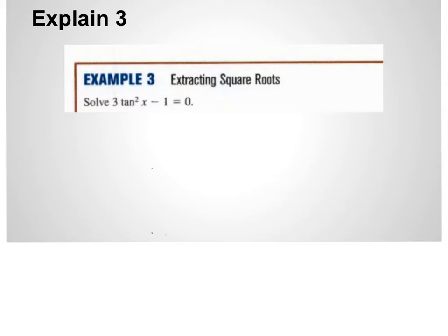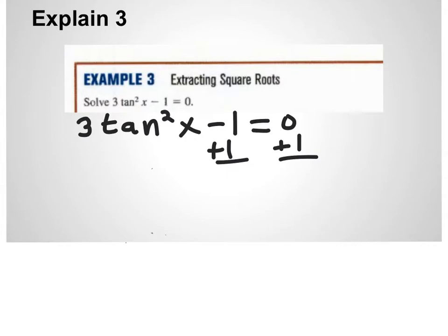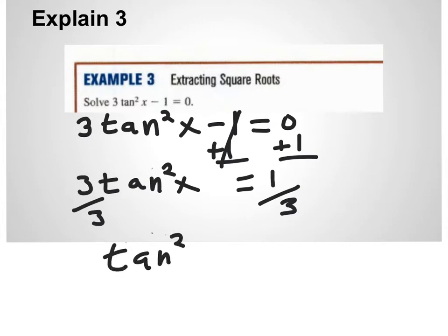Remember our goal is to isolate the trig function. So I have 3 tan²x - 1 = 0. The first thing I want to do is add 1 to both sides. We're using our inverse properties to isolate tan²x. That leaves me 3 tan²x, the 1's go away, equal sign comes straight down, and it's equal to 1. Next I'm going to divide both sides by 3, and that leaves me tan²x = 1/3.